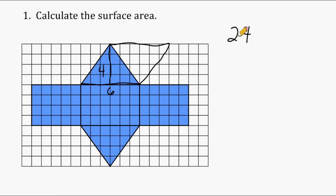If I wanted to find the area of just this single triangle, I could do base times height and then divide by 2, which would give us 12. But because this triangle is congruent to that triangle, 12 plus 12 puts us back at 24.